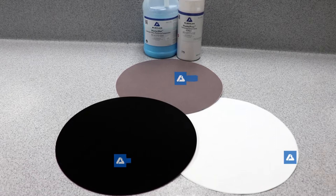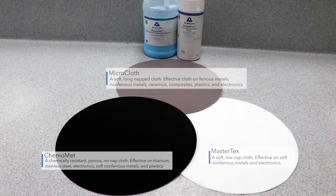Microcloth is a soft, long-napped cloth that provides an excellent surface finish on a wide variety of materials. Mastertex is a softer, low-napped cloth effective on soft, non-ferrous metals and electronics.